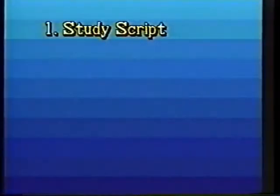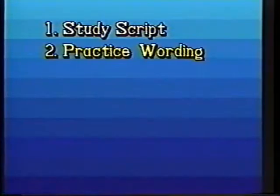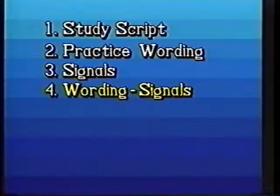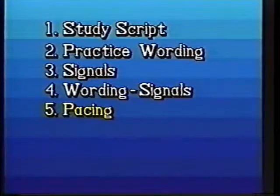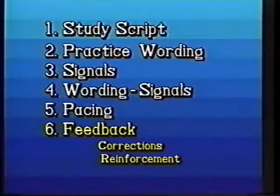First, study the script to understand the exercise: Is a pattern established and repeated? Is a model, lead, or test included? Are individual turns specified? Are steps repeated? The next step is to practice the wording, emphasizing keywords and pausing appropriately. Then determine the signals you're going to use, coordinate the wording and signals, and keep practicing until your pacing is rapid. Finally, practice doing the whole exercise using corrections and reinforcement.